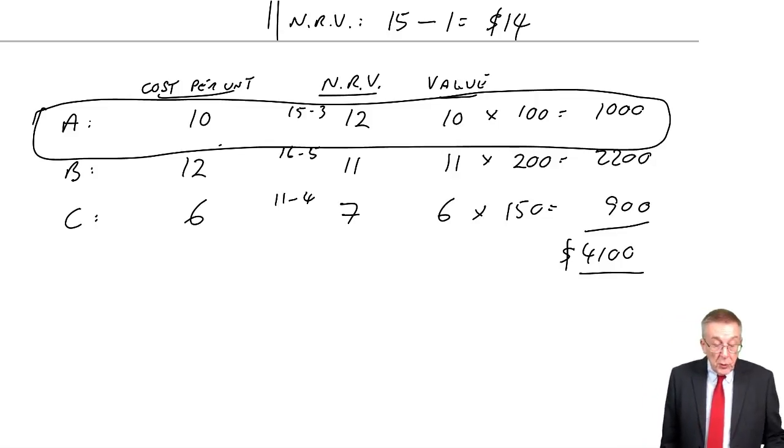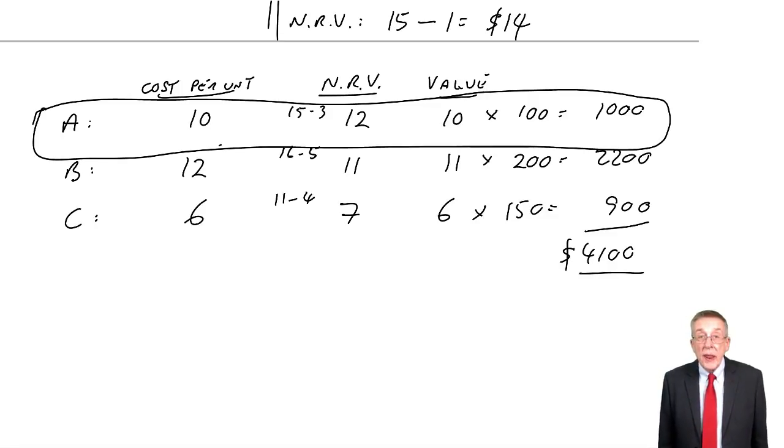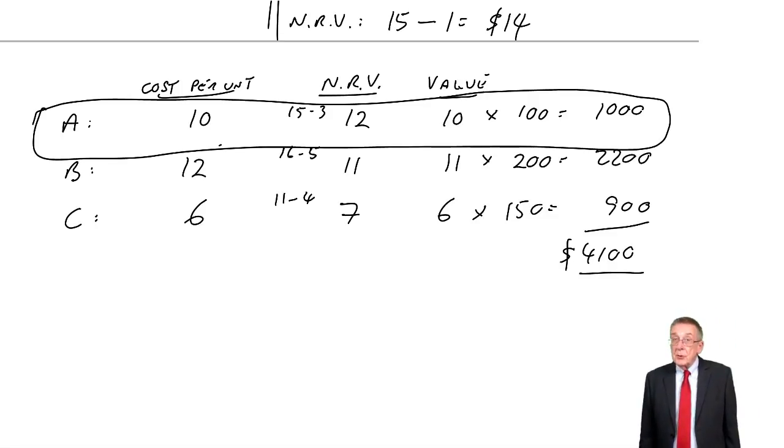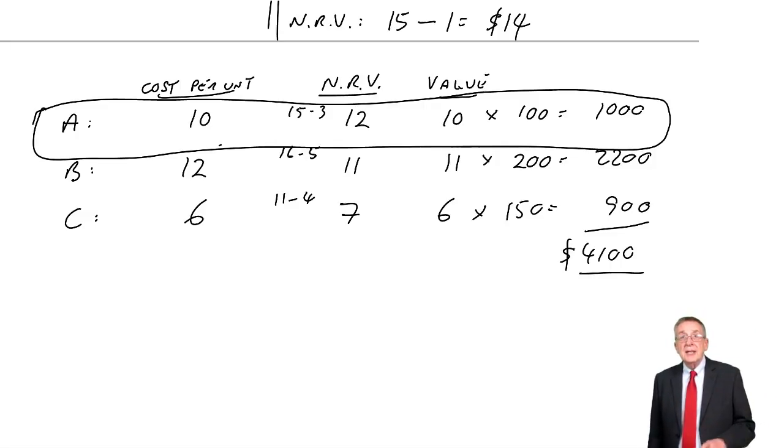All right, so that's the first rule in the accounting standard, always value at the lower of cost and net realizable value. The second rule though, takes a little bit more work, is how we decide what the cost actually is. Now if you're wondering why that's a problem, well, I'll explain why in the next lecture and how we deal with it.